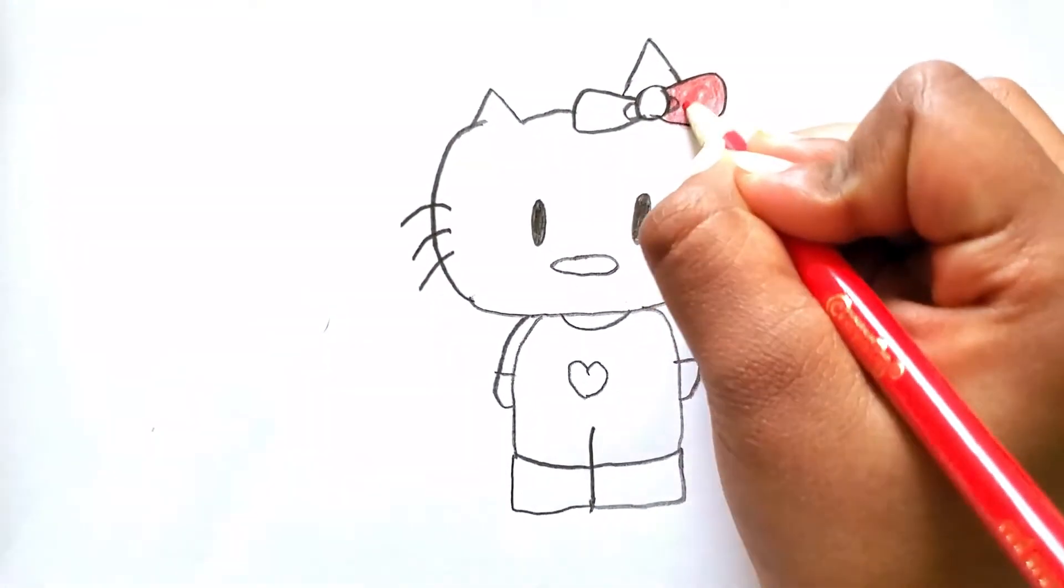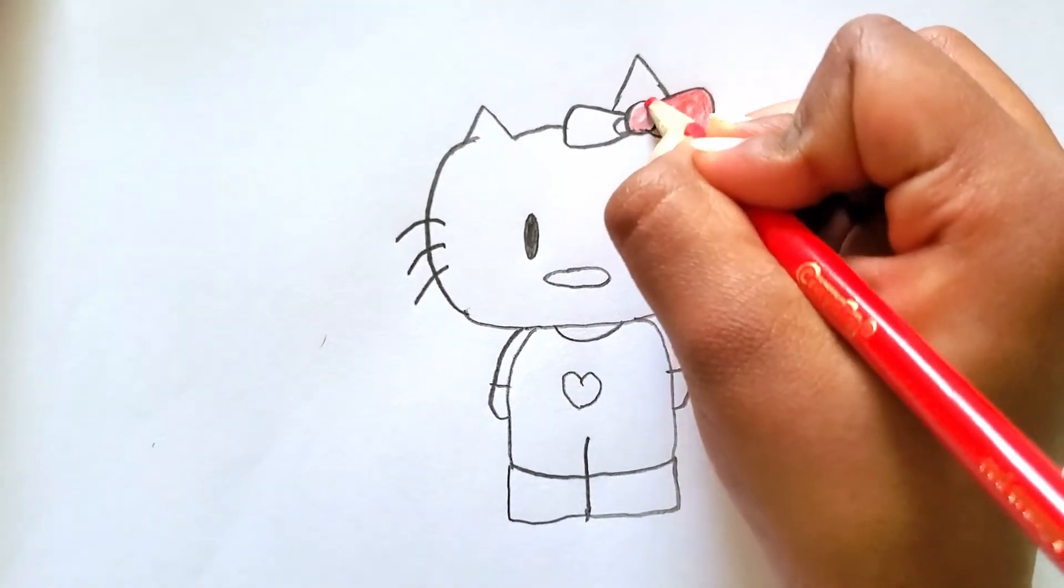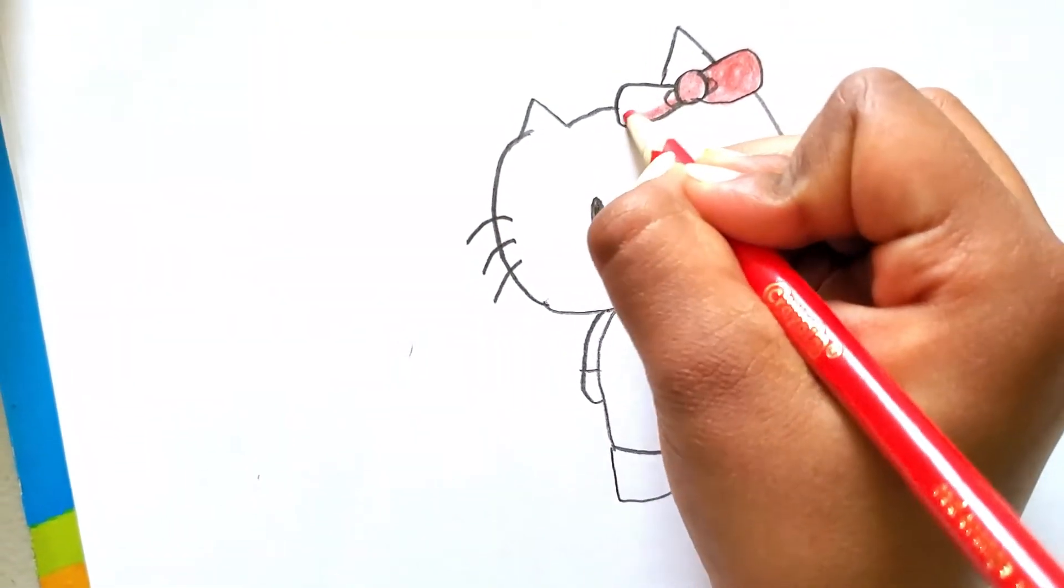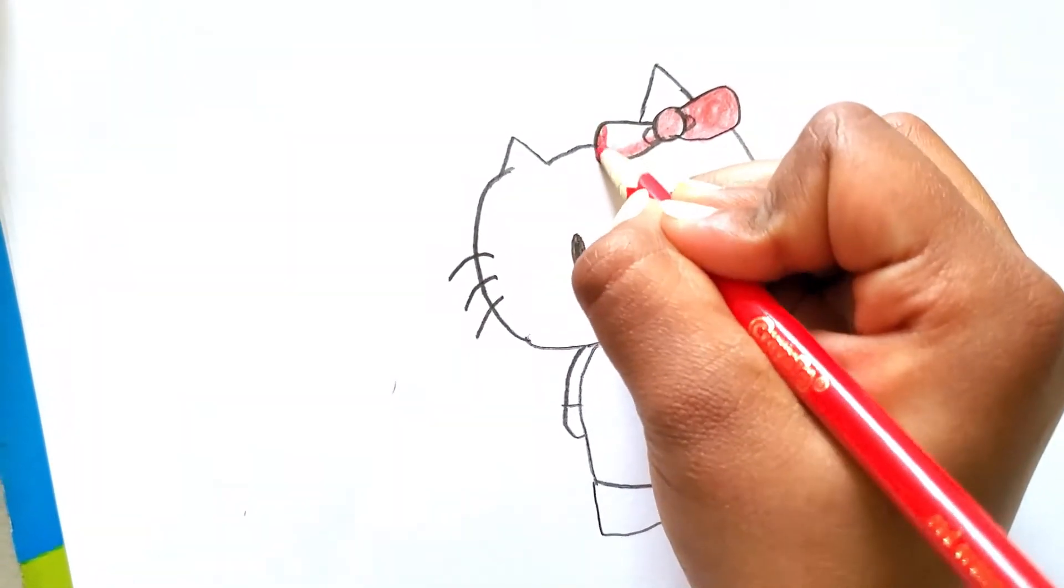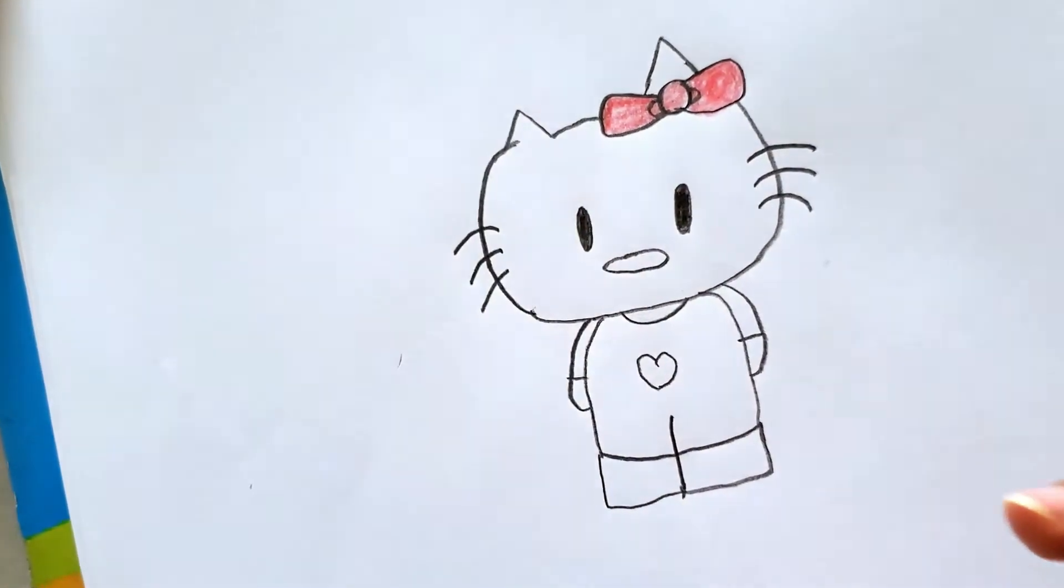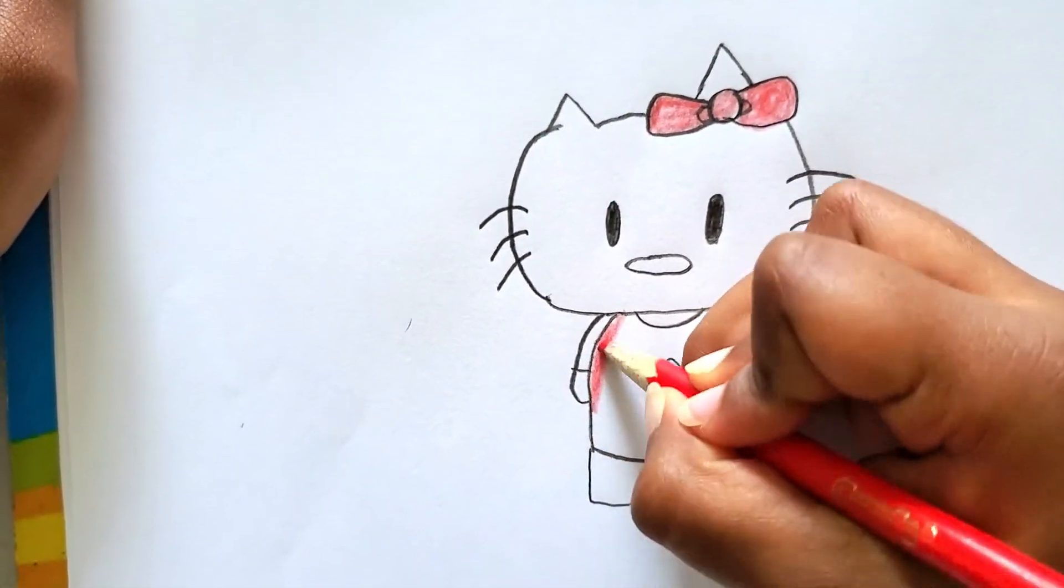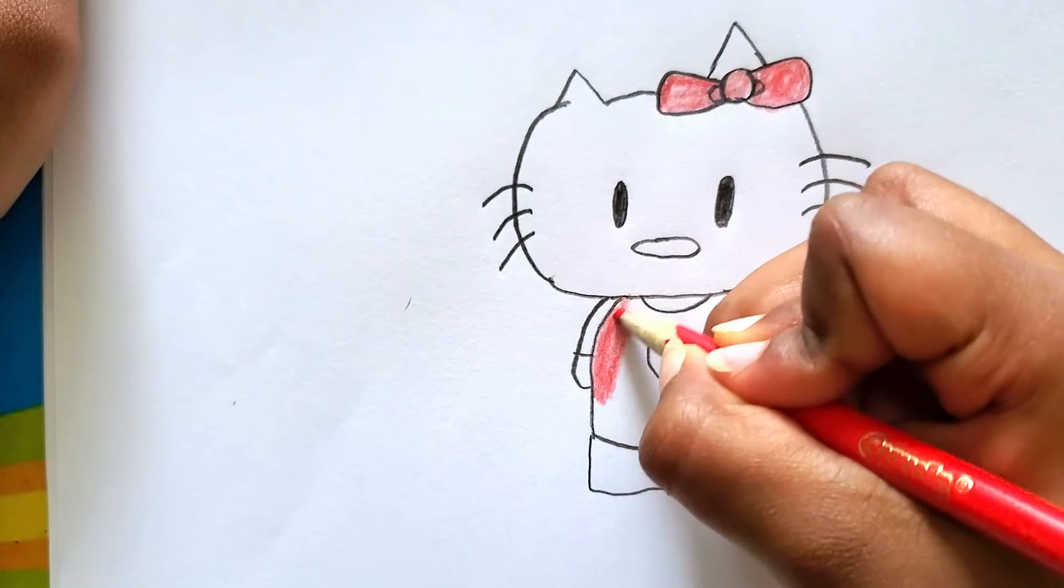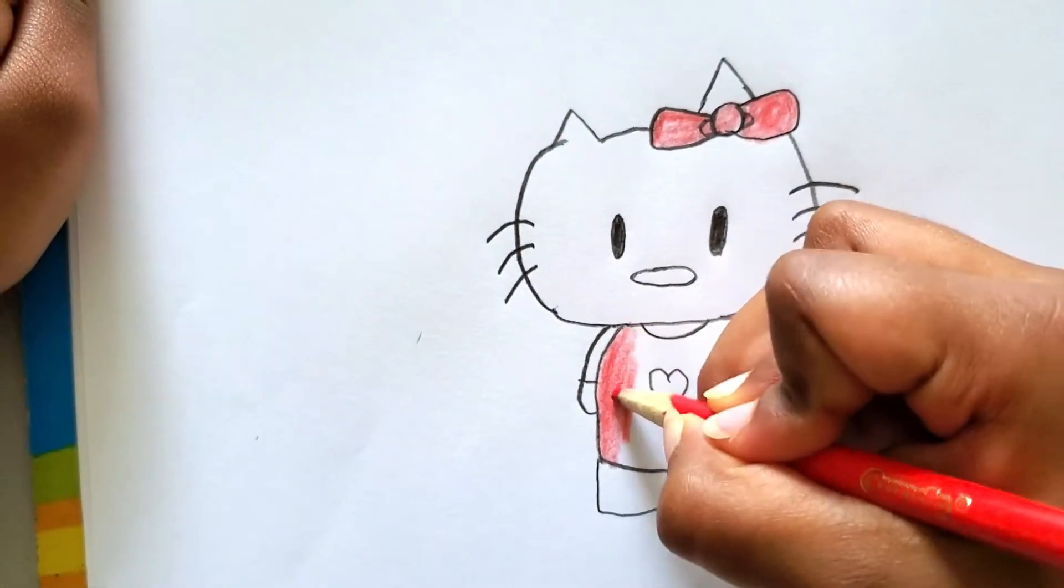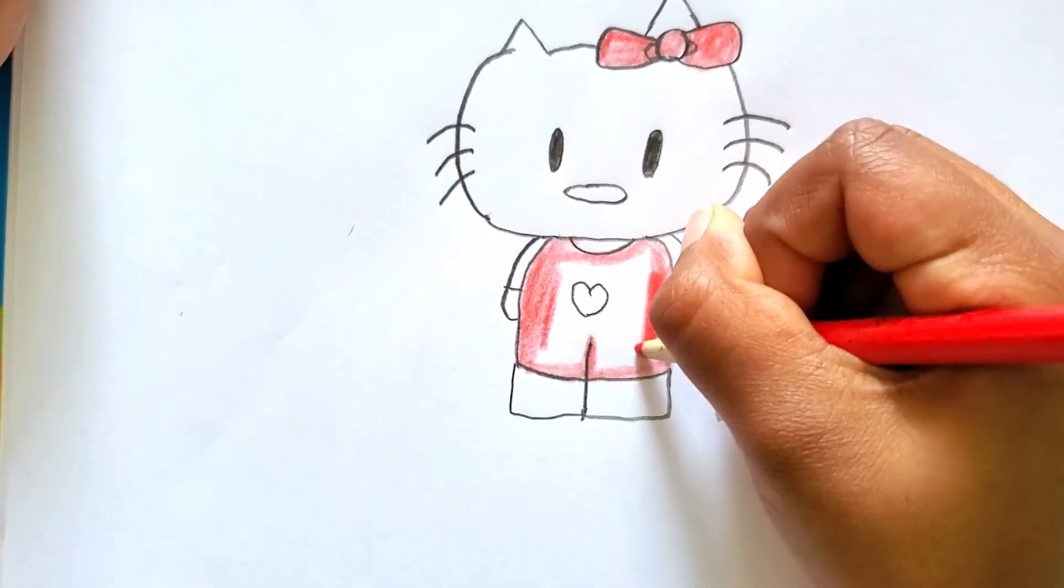So I'm just coloring my bow red. You can color Hello Kitty's bow another color if you want. So color, color, color, up and back down. So I'm going to keep coloring.